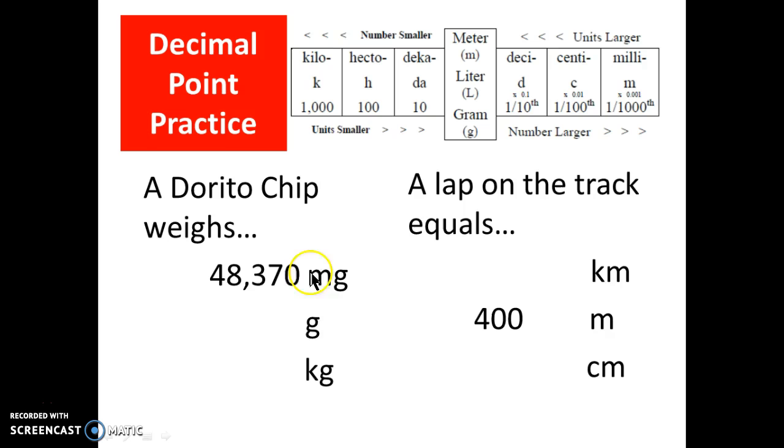So in the Doritos chip example we're starting with milligrams. If I want to go to grams I have to find them on the chart. Milligrams is here and it's three hops away from grams. So I find the decimal point and I go one, two, three hops in the same direction of the chart, in this case to the left, to find that 48,370 milligrams is 48.37 grams.